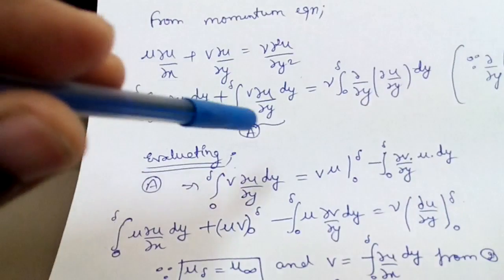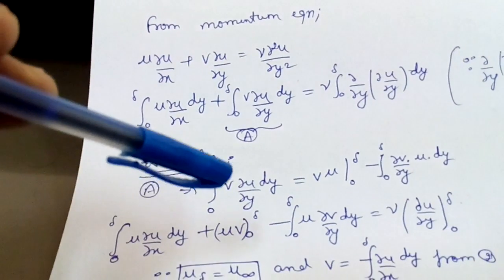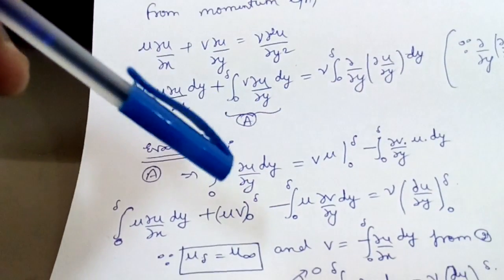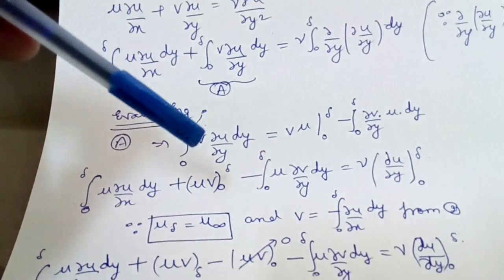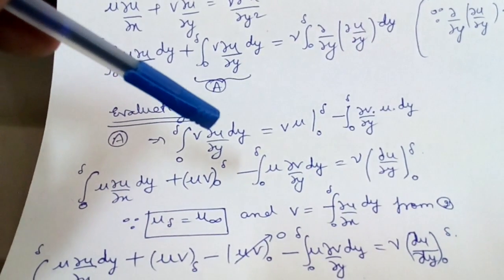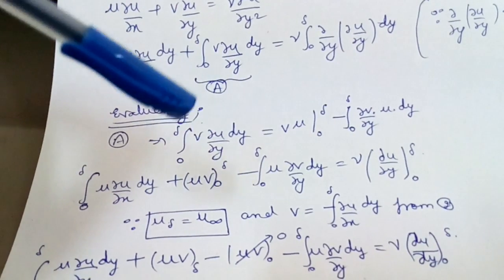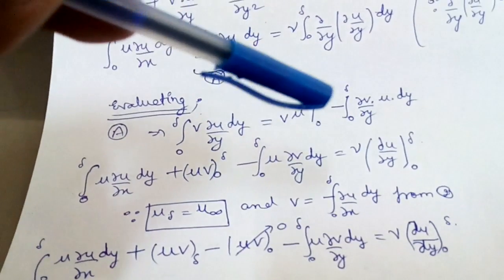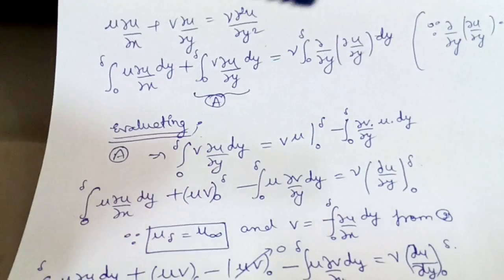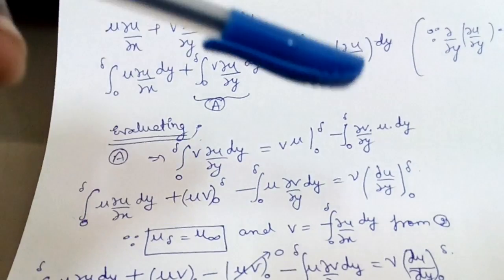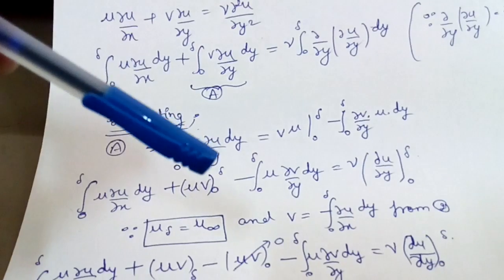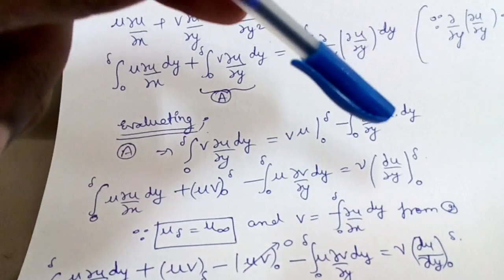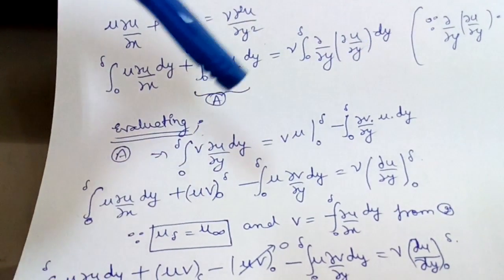Taking the second integral separately and evaluating by parts: integral from 0 to delta of v del u by del y dy equals v·u evaluated from 0 to delta, minus the integral of del v by del y times u dy. This is the standard integration by parts where the first function is v and the second function's integral is u.